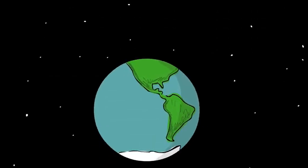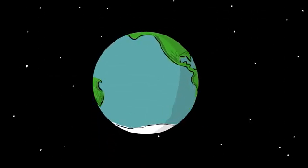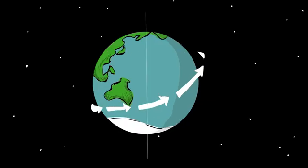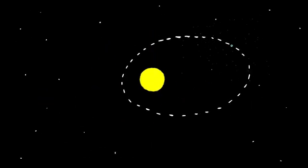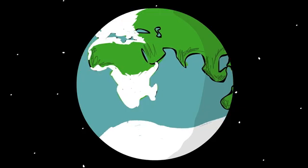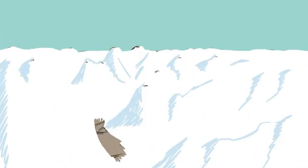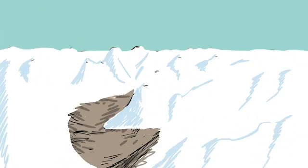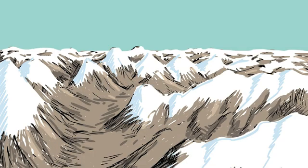The Earth has always experienced climate change. Variations in the planet's tilt and its orbit around the Sun produce climate patterns called Milankovitch cycles. In the last few million years, the cycle has alternated between cold periods called ice ages and warmer periods called interglacials.